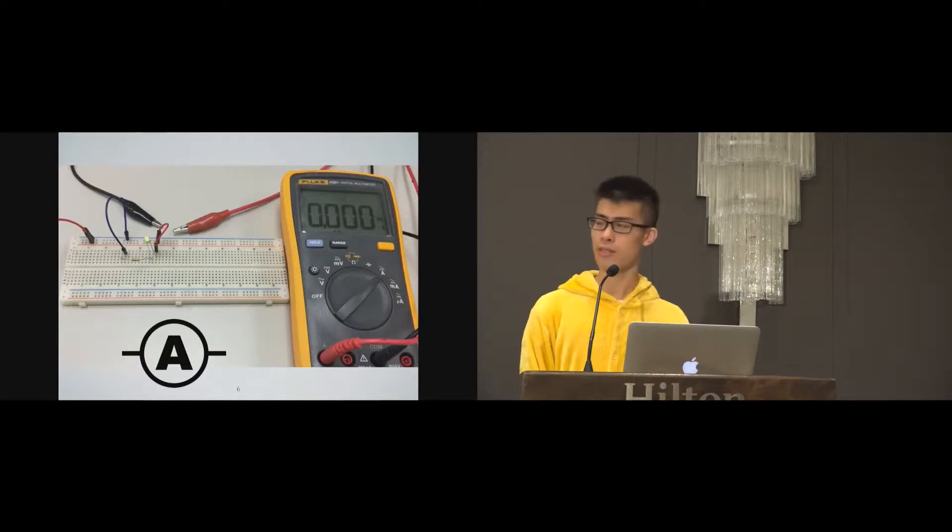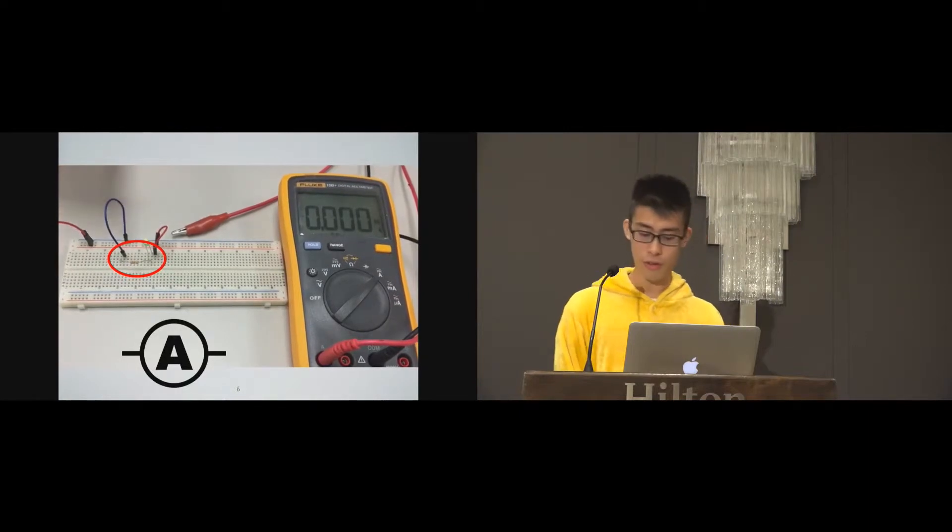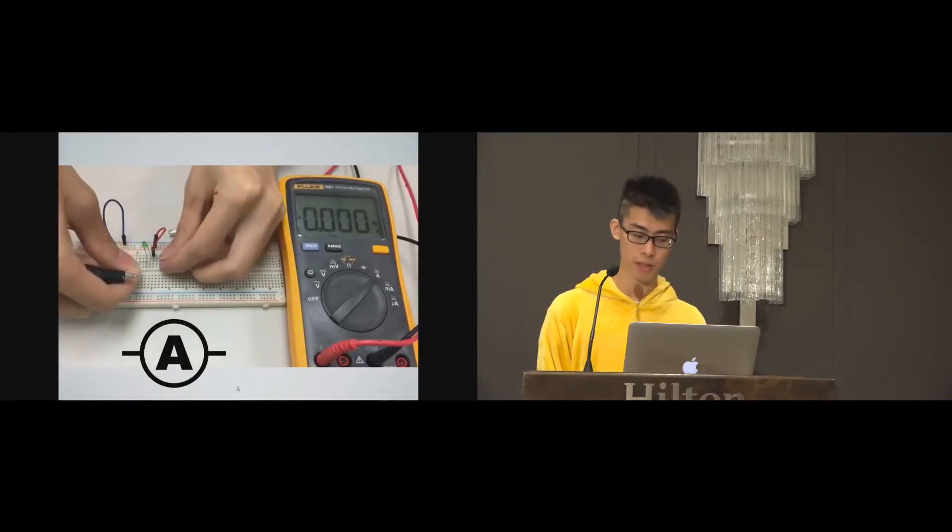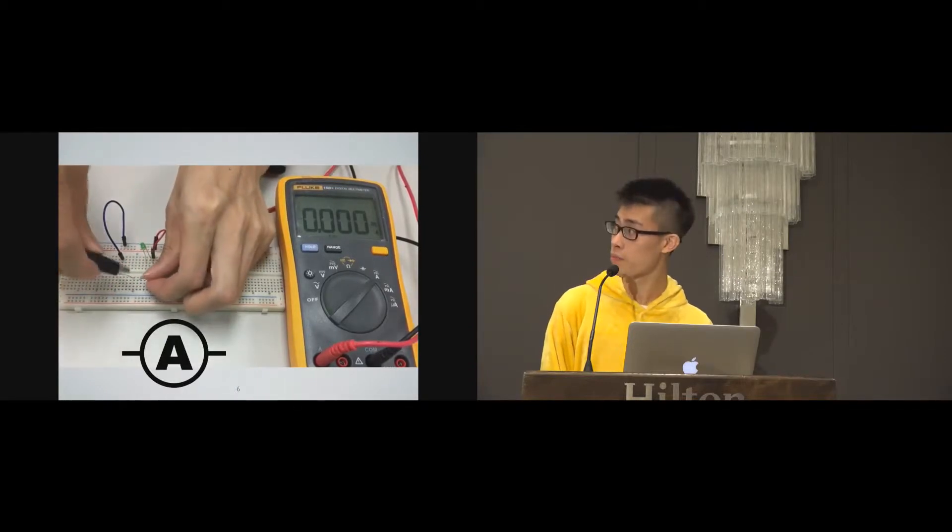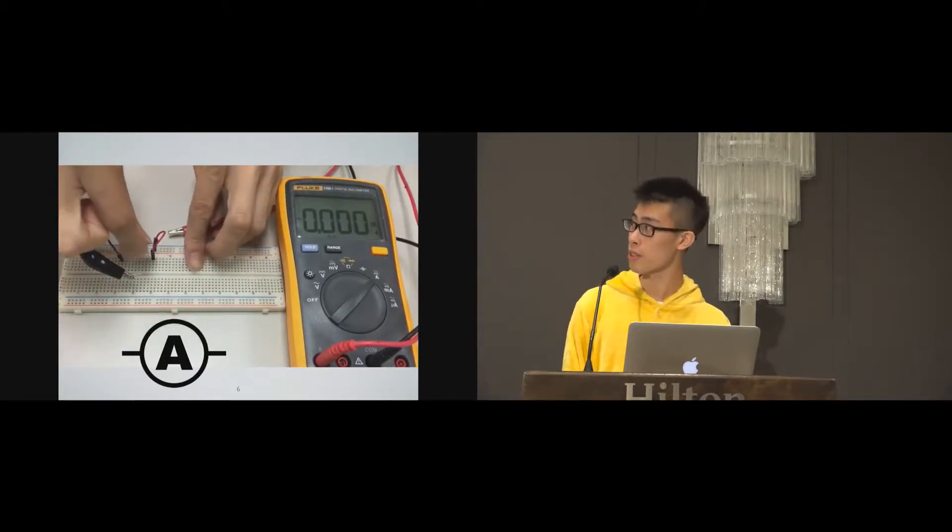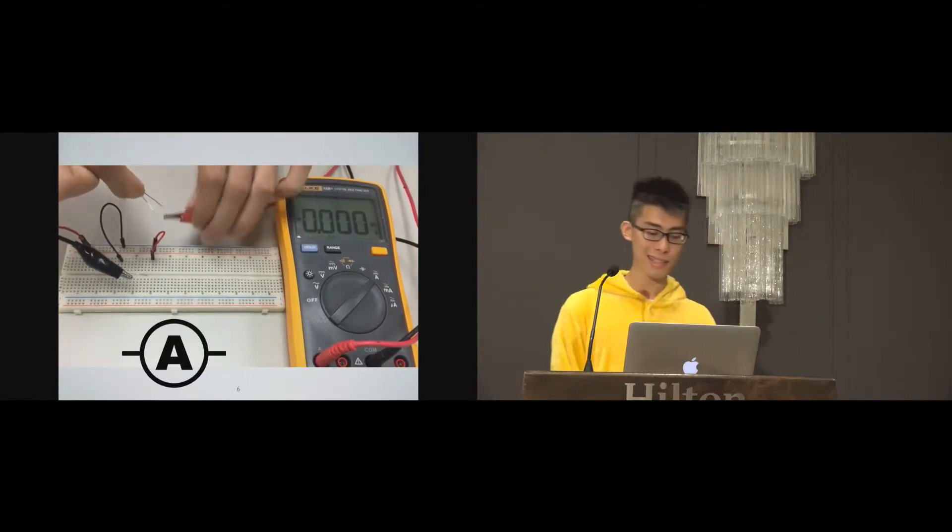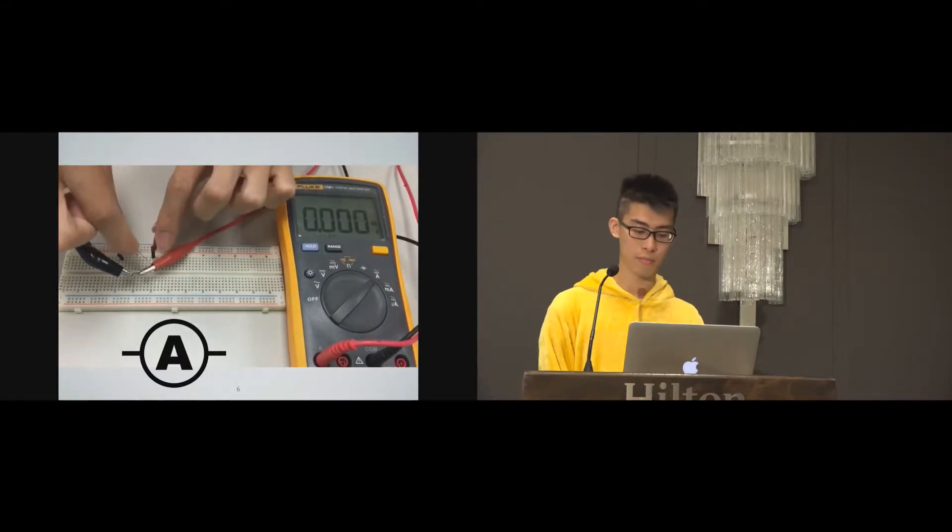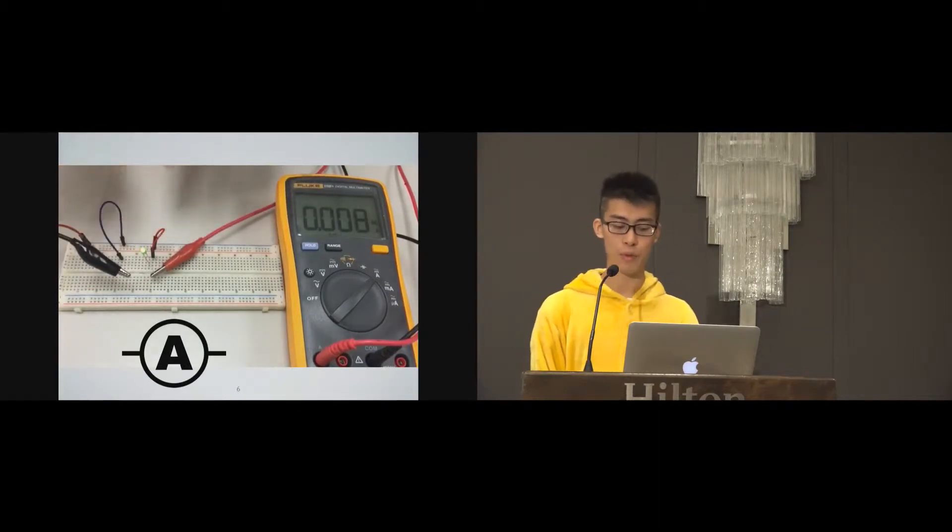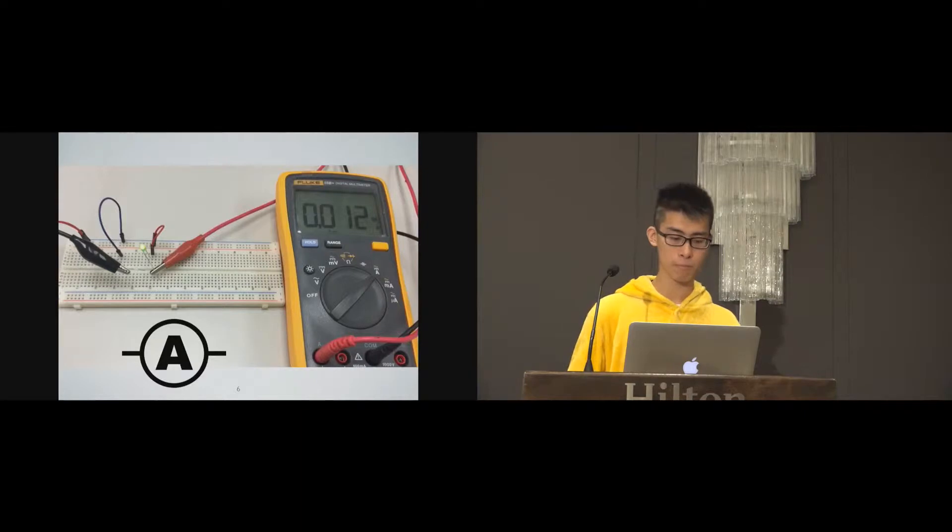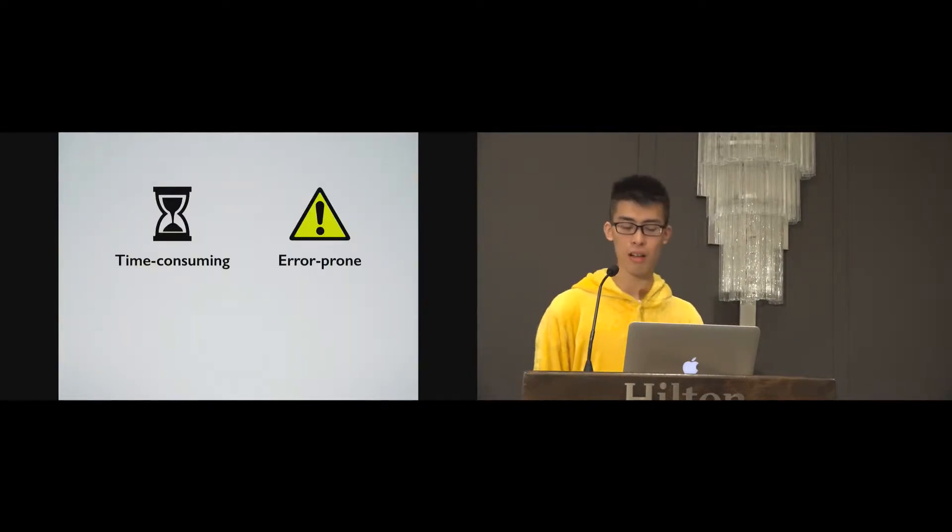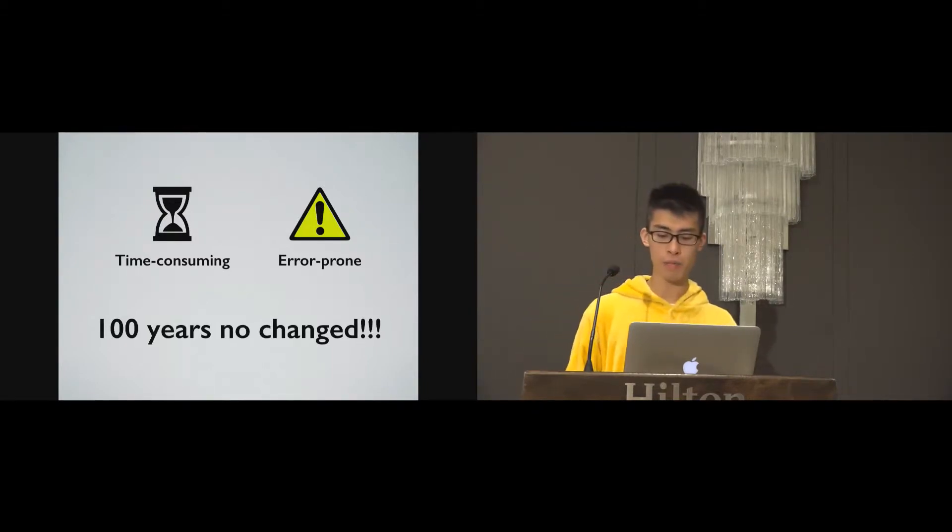But how do we measure the current using the state-of-the-art tools nowadays? First, we have to unplug the components to be in series with the multimeter so that we can measure the current. As everyone can see from the video, it is very cumbersome. After that, we have to restore to the original circuit. The whole procedure is not only time-consuming but also error-prone while plugging as well as unplugging. The measurement approach has not been changed for 100 years, so how can we make it better?